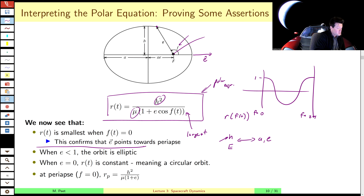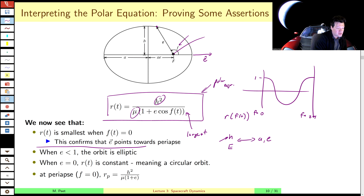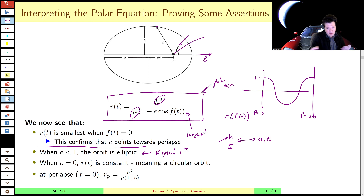When e is less than one, the denominator never becomes zero, and so we sweep out an ellipse as we go through f from zero to two pi. I haven't proved that elliptical motion — this is Kepler's first law — but it's commonly known and relatively easy to verify if you are interested in doing so.